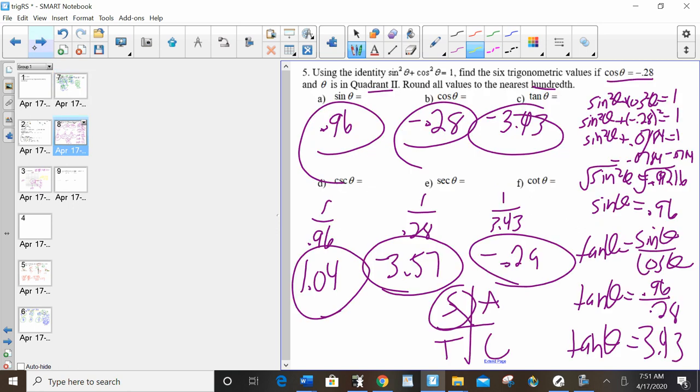And then your other option, if they give you sine or cosine, you can use the Pythagorean identity. Sub into that to do the algebra. Tangent is sine over cosine. And then once you have your three, you're going to find the reciprocals to find the reciprocal functions. And don't forget at the end, you always want to check the sign. It's in quadrant two, so only sine is positive. Everything else is negative.